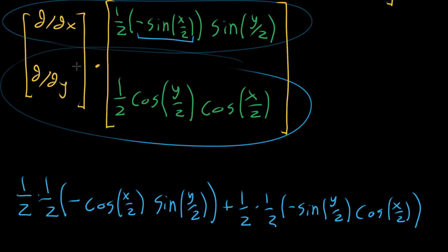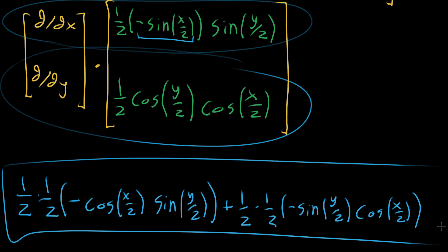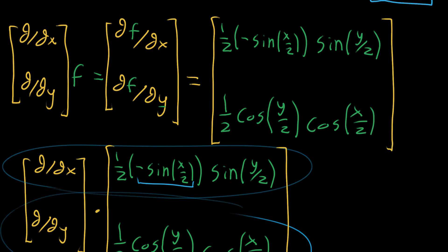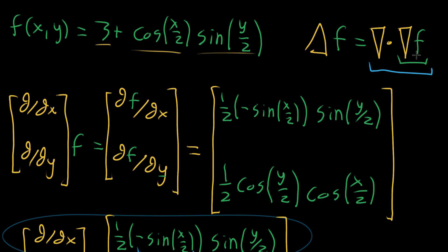That is the divergence of the gradient field — the divergence of the gradient of our original function gives us the Laplacian. We could simplify this further since both terms look identical, but the main point of this video is how you go through that process: take the gradient of your function, then the divergence of that, and that's what the Laplacian is. See you next video.